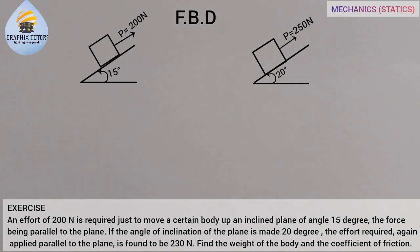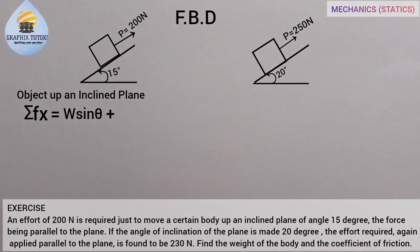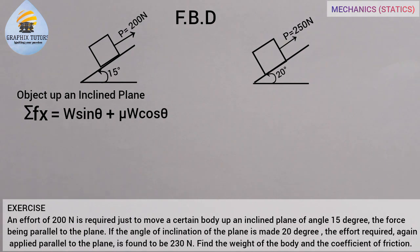There is one thing you need to know: when an object is moved up an inclined plane, the formula given is the summation of Fx equals W sine theta plus mu W cos theta. But when the object is moving down an inclined plane, the positive sign becomes negative.